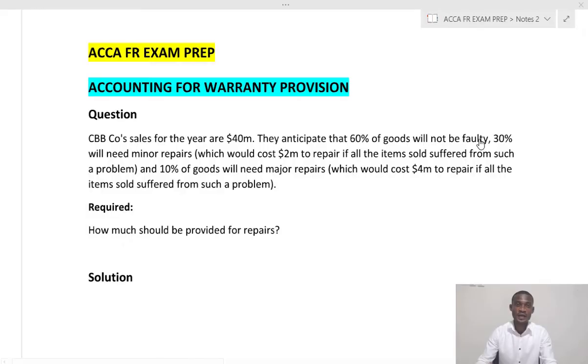So how do we measure a warranty provision where there is a light population of outcome? We use what we call the expected value approach to measure the provision. So let's look at the question.